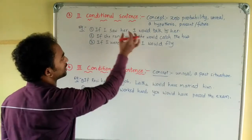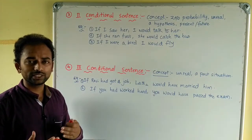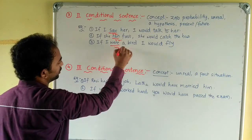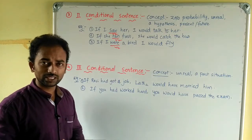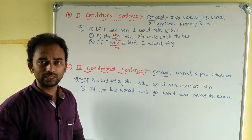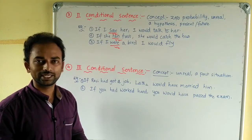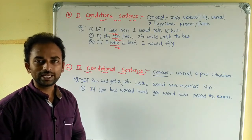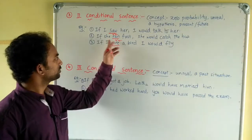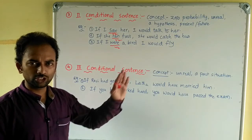For example: if I saw her, I would talk to her — meaning I am not seeing her, but imagining the situation. Another example: if she ran fast, she would catch the bus — but she is not running fast, so this is a zero-probability, unreal condition in the present.